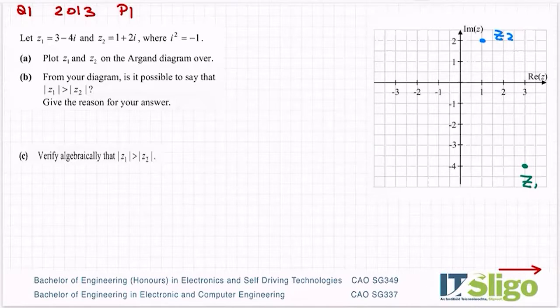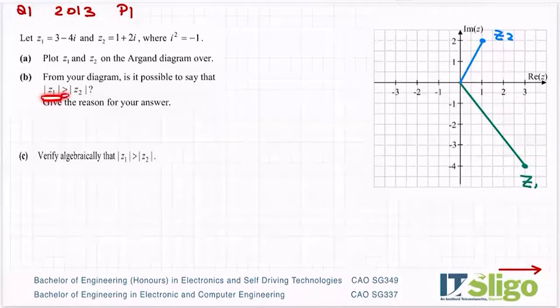So is the modulus of z1 greater than the modulus of z2? When you're talking about the modulus, you're talking about the distance out from the origin. So the easiest thing to do is to draw it like such, and the same for this one. So the distance between these two don't matter at all - it's all with respect to that home point or that origin.